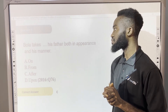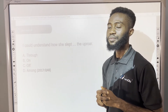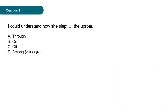Question four: 'I could not understand how she slept dash the opera.' What is the correct phrasal verb? A: how she slept through, B: how she slept on, C: how she slept off, D: how she slept among? This is question 48 of the 2017 past question. Why not give it a try?